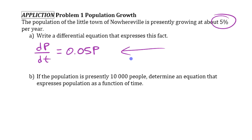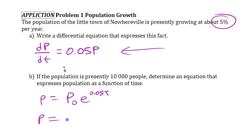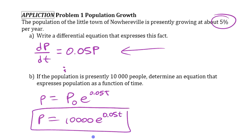We know from the law of exponential change that the solution to this differential equation is P = P₀e^(kt), which is P₀e^(0.05t). And P₀ we happen to know here is 10,000. So that's our solution.